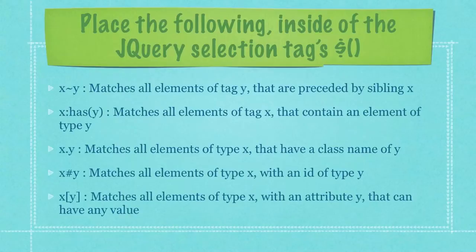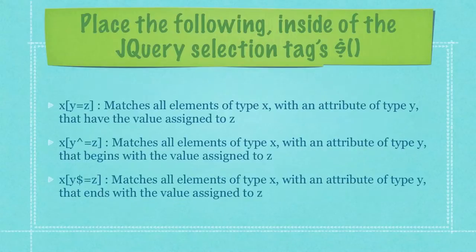The third will match all elements of type X that have a class name of Y. The fourth bulleted item will match all elements of type X with an ID of type Y. And finally, the fifth bulleted item will match all elements of type X with an attribute Y that can have any value.